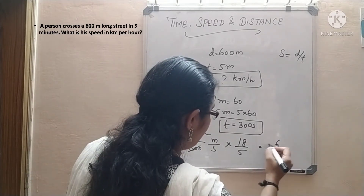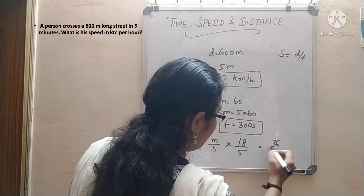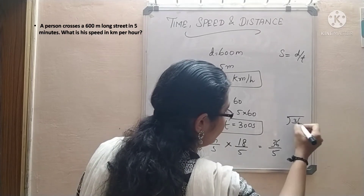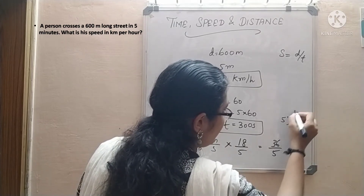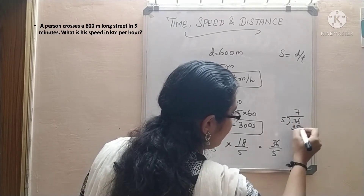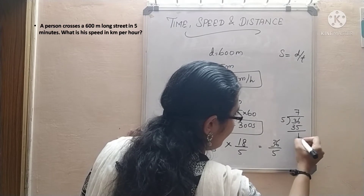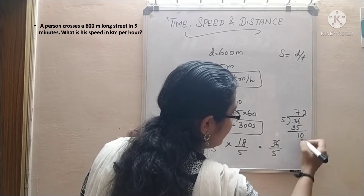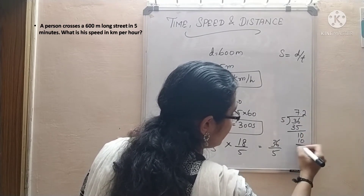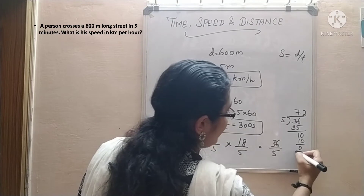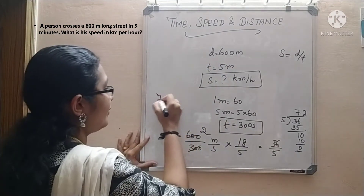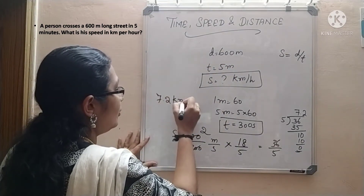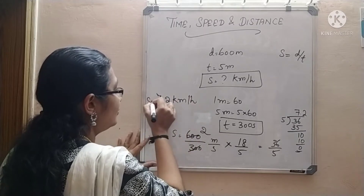So that gives us 36 divided by 5. Computing: 5 × 7 = 35, remainder 1, giving 7.2. So the speed is 7.2 kilometer per hour.